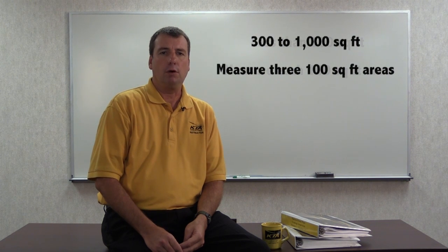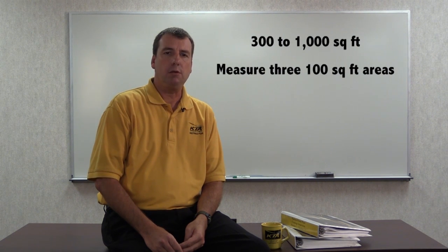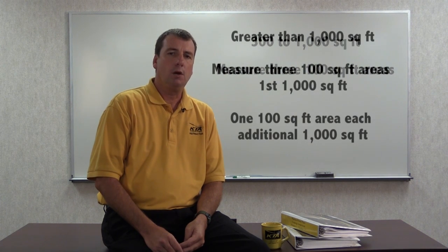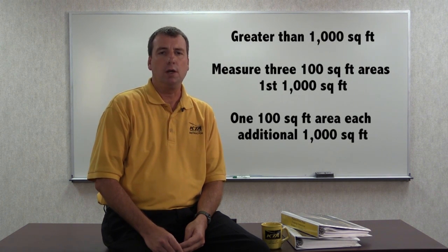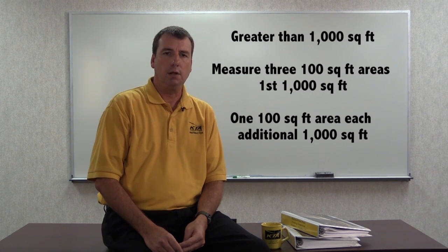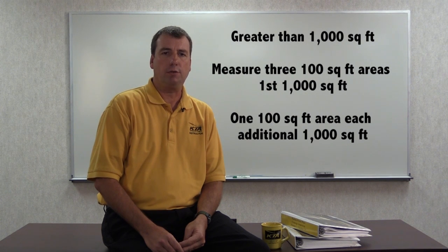For areas of coating from 300 to 1,000 square feet, three random areas are selected and measured. For areas of coating exceeding 1,000 square feet, three random areas are selected from the first 1,000 square feet, plus one additional area for each additional 1,000 square feet.